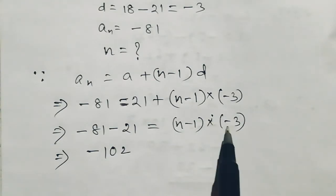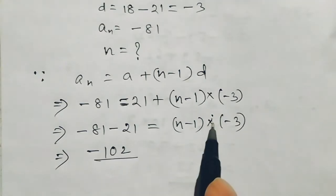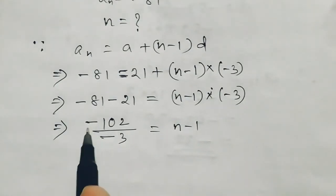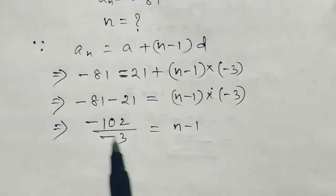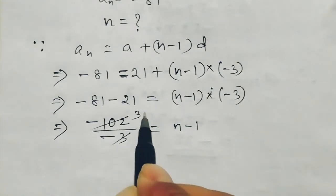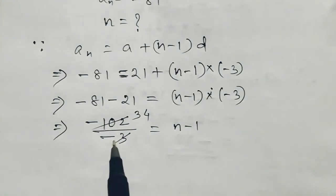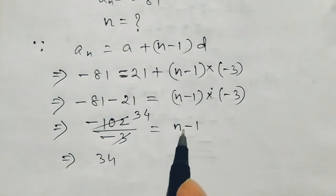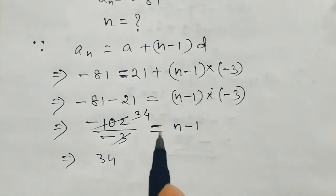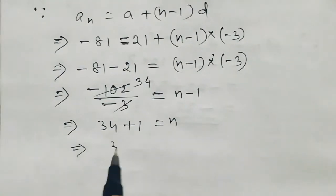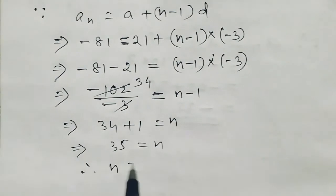If I have d equals minus 3, then I can do a side change. Now I can have minus 1, so minus cancel. Divide by 1. So 34 is equal to n minus 1, then n minus 1 equals 34. So plus 1 equals n. So 34 plus 1 equals n. 35 equals n, and n equals 35.